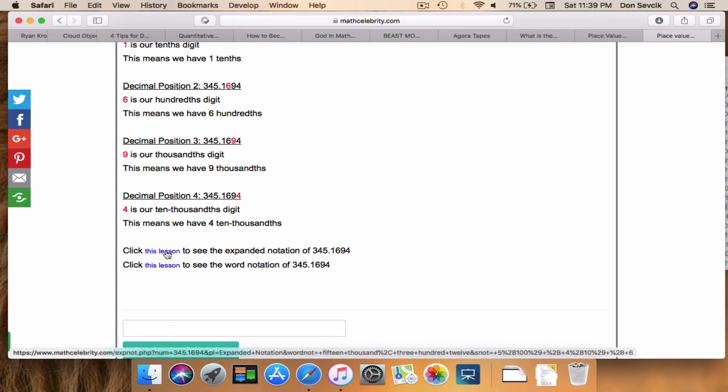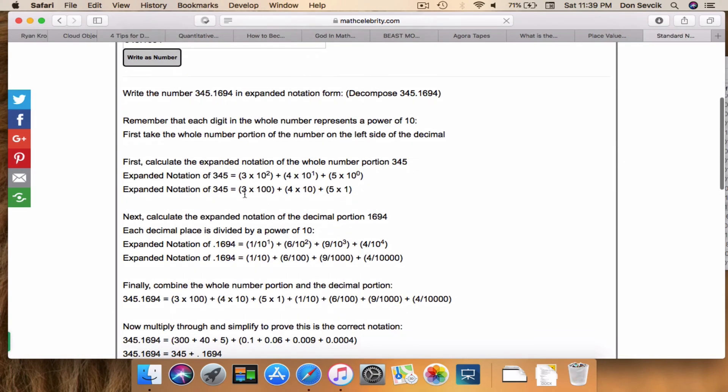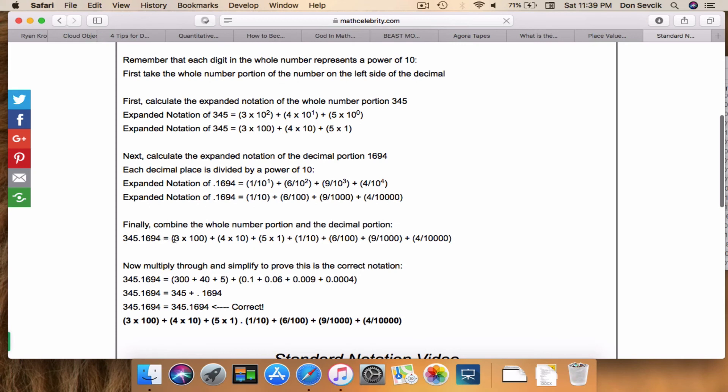And boom, we work out each step: 3 times 100, 4 times 10, 5 times 1, and then we're dividing here, so it's two moves in one.